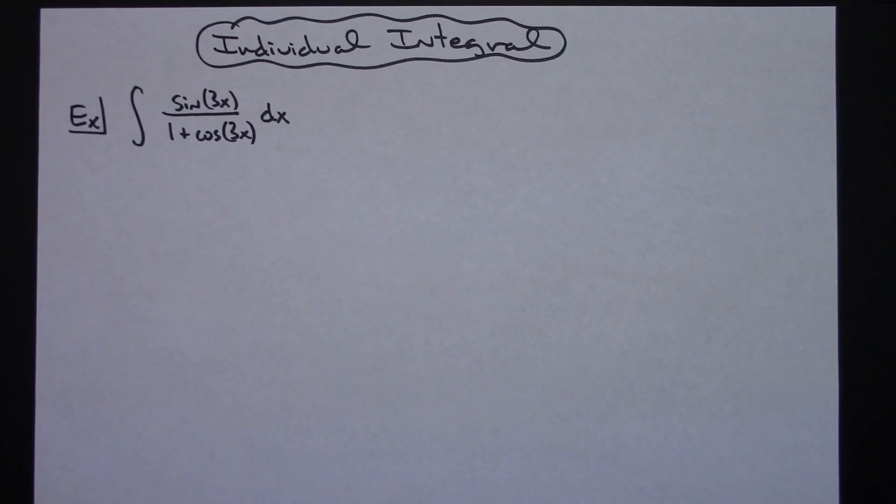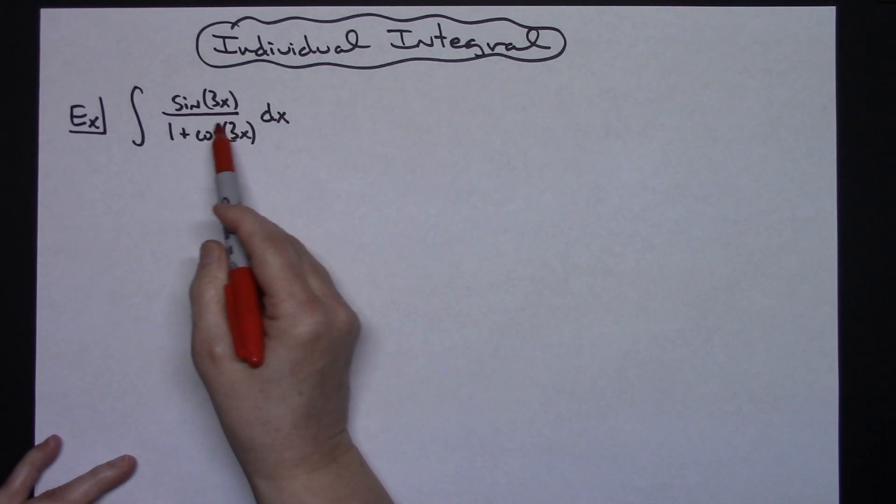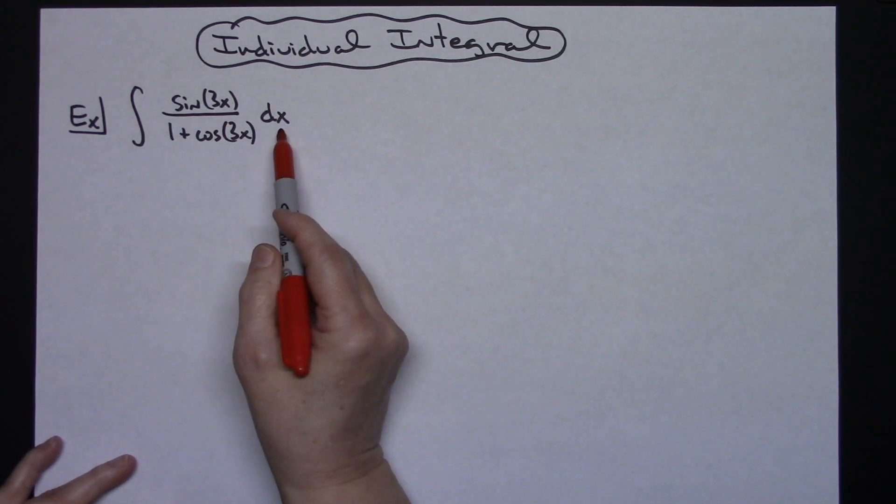In this video I'm going to work out an individual integral. It's going to be a straightforward u-substitution integral that you would find very early on right after you had learned u-substitution. So we're going to integrate sine of 3x over 1 plus cosine 3x dx.